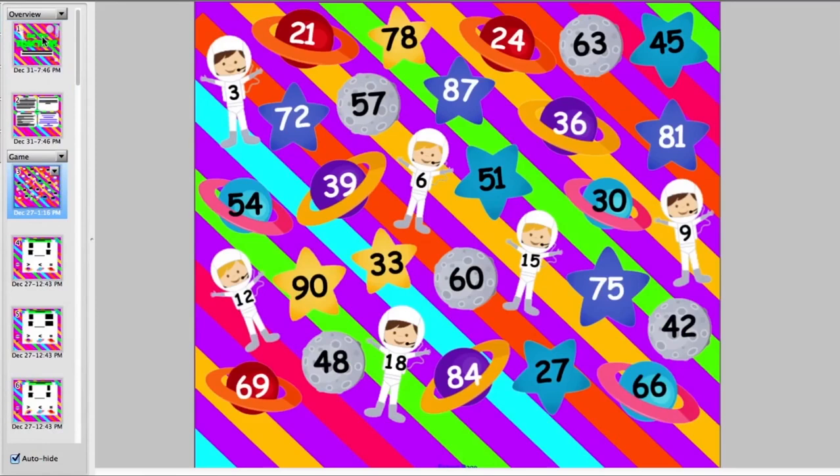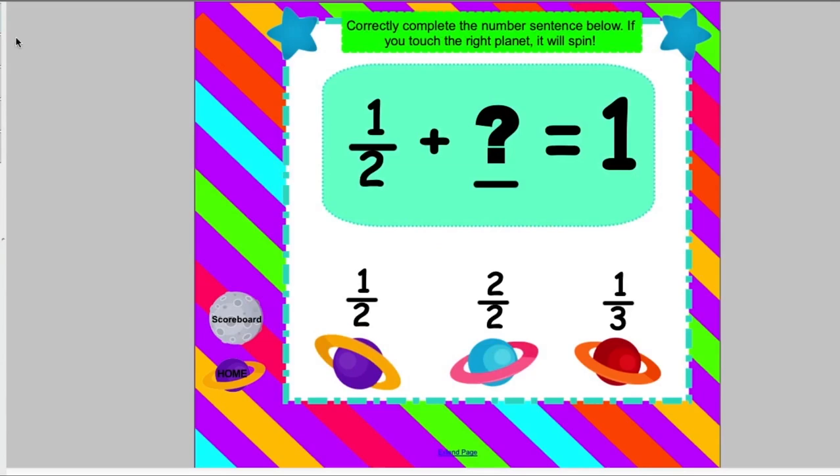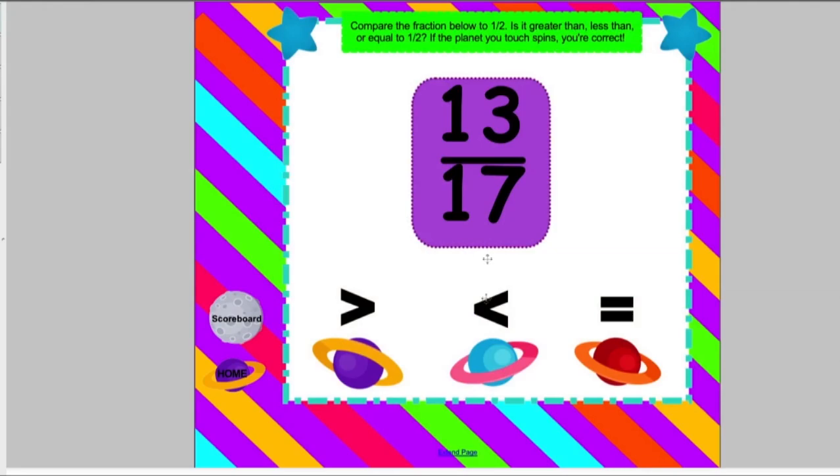In far-off fractions, students compare fractions, compare fractions to a benchmark of one-half, find the fraction that is equivalent, find the correct fraction that will make the equation equal to one, add and subtract mixed numbers with like denominators, and solve word problems containing fractions. To self-check answers, students touch the right planet, and it will spin.